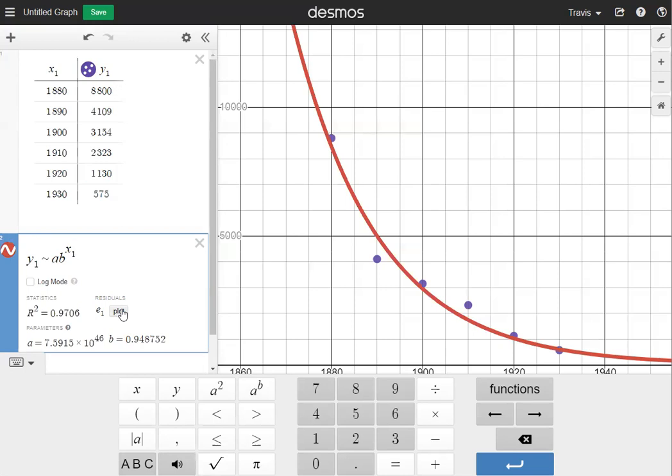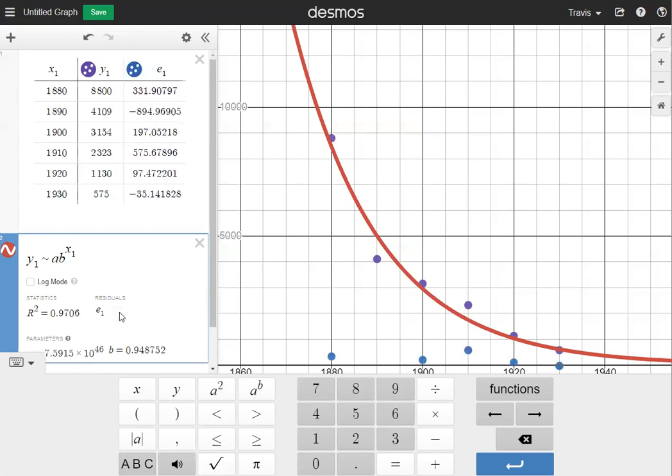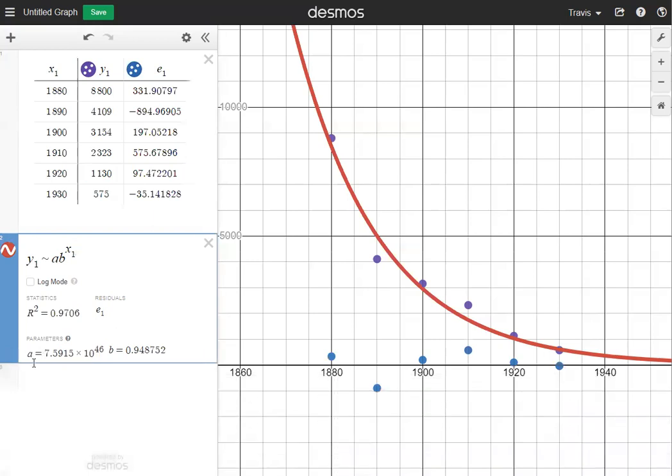Over here under residuals, we'll see our error terms. I'm going to click the plot button. So now at the bottom of the screen, you'll see our error terms. The more that the error term strays from the x-axis, the more error you'll see for the associated dot. So this dot is quite far from the regression curve, so it's going to have a much larger error than, for example, this dot.